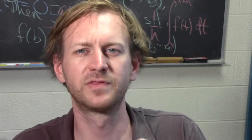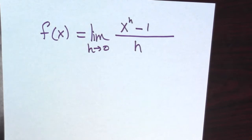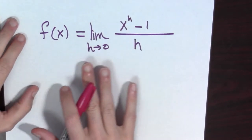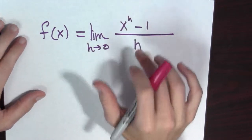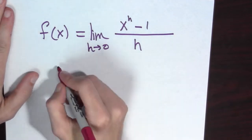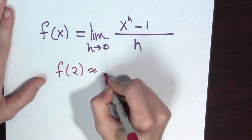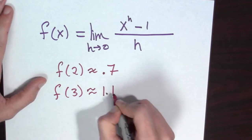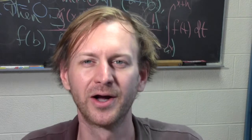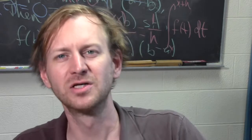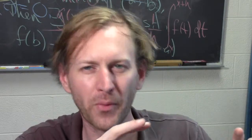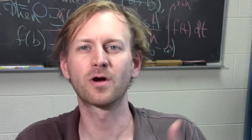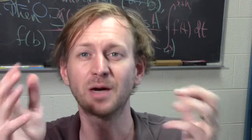Maybe we should think of this limit as a function of x itself. So we've been studying a function: f(x) equals the limit as h goes to 0 of (x to the h minus 1) all over h. We've just shown that f(2) is around 0.7 and f(3) is around 1.1. So — is there a number that makes f(x) equal to 1? We have 2 giving about 0.7 and 3 giving about 1.1.